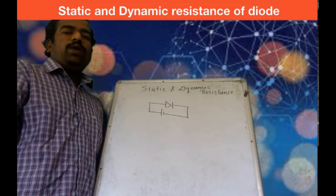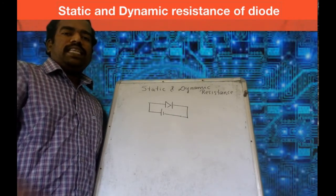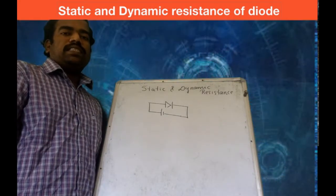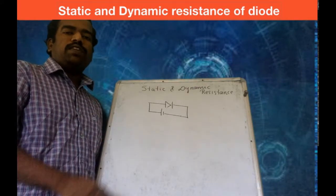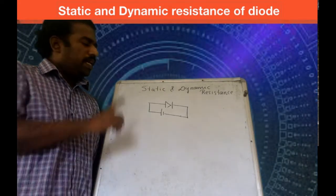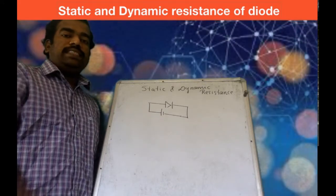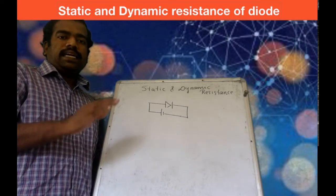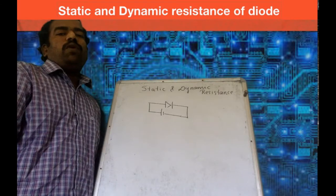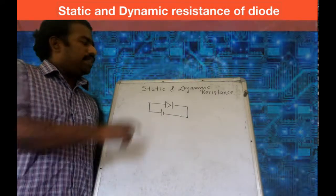If you connect the diode in reverse biased mode, the depletion region width increases. In reverse biased condition, the resistance is very large — on the order of mega-ohms. This resistance is called static resistance. When a DC source is applied to the diode, the diode conducts current in only one direction, and the resistance offered by the diode is called static resistance.